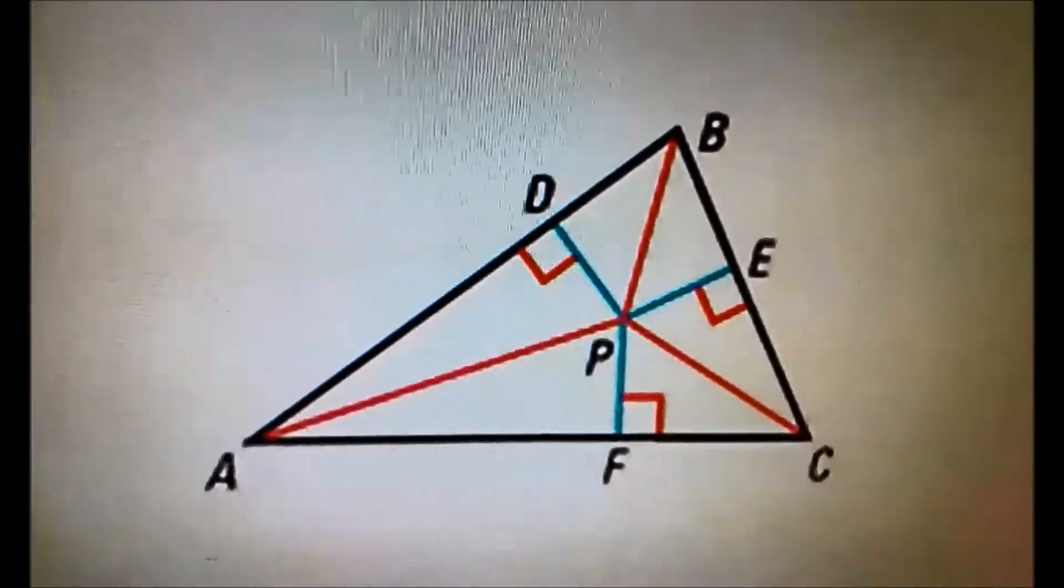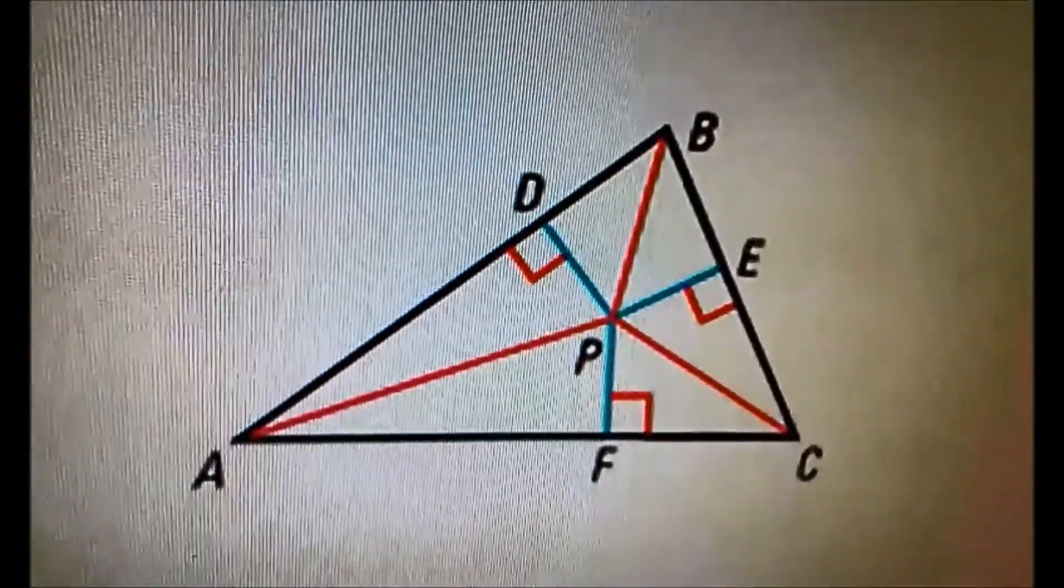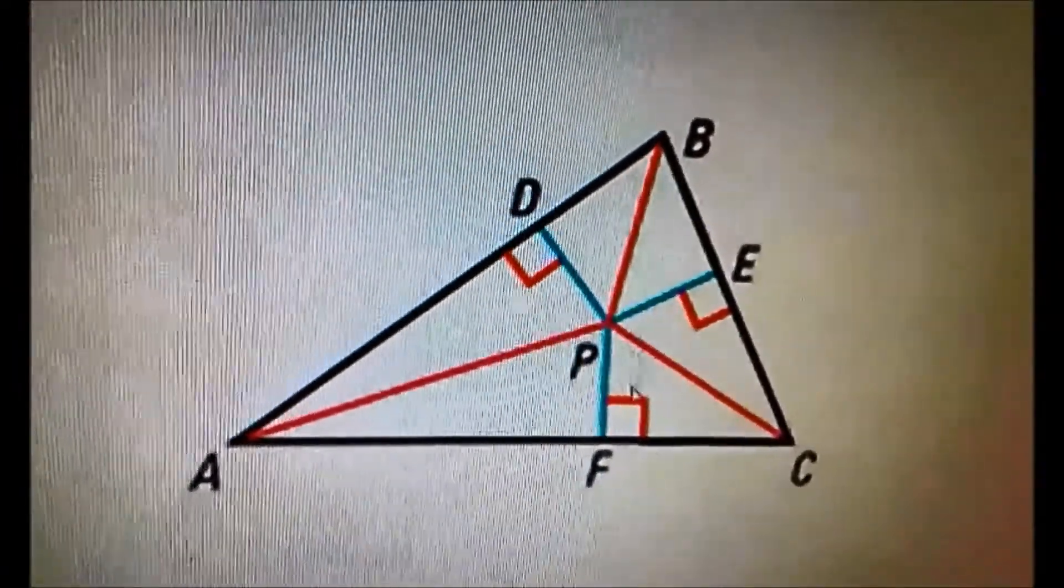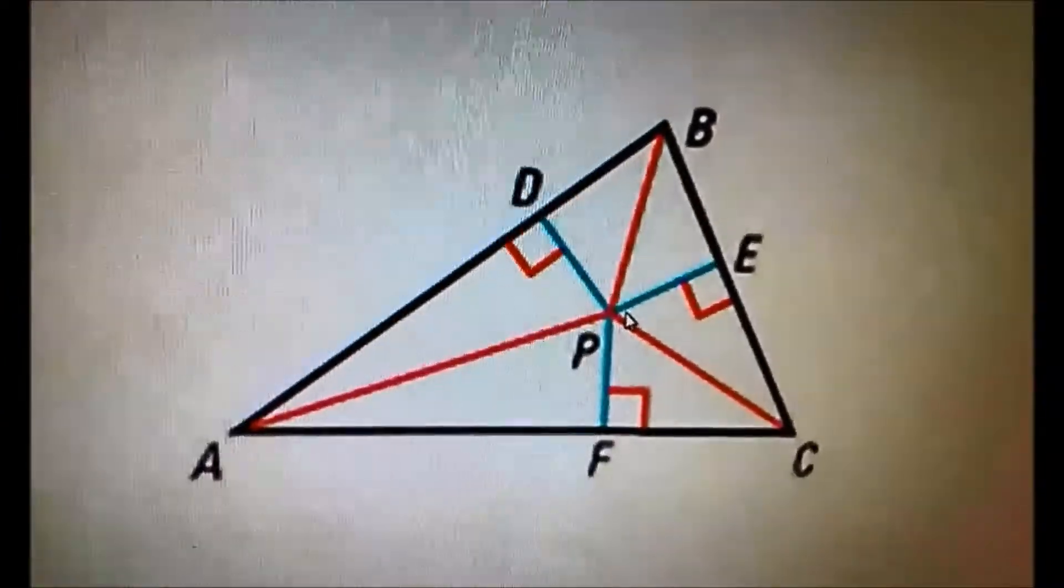Now we're going to go on to the concurrency of angle bisectors. The blues are the angle bisectors. And the middle, which is P, is the incenter.